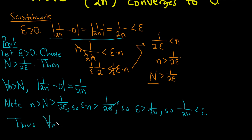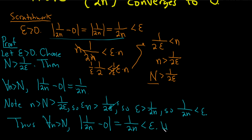Thus, for all n bigger than capital N, the absolute value of 1 over 2n minus 0 equals 1 over 2n, which we just showed is less than epsilon. That completes the proof, because we showed that for any epsilon greater than zero there exists a positive integer capital N such that for all little n greater than capital N, the distance between our sequence and its limit is less than epsilon. I hope this video has been helpful.